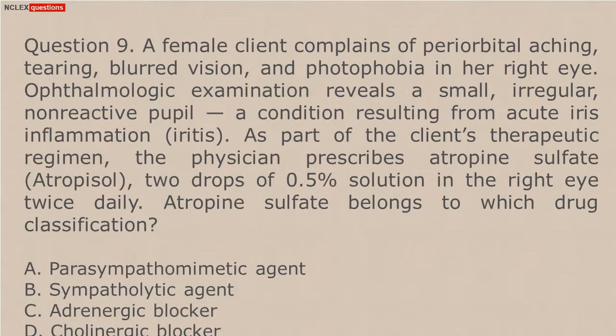Question 9. A female client complains of periorbital aching, tearing, blurred vision, and photophobia in her right eye. Ophthalmologic examination reveals a small, irregular, non-reactive pupil, a condition resulting from acute iris inflammation (iritis). As part of the client's therapeutic regimen, the physician prescribes atropine sulfate (Atropol), 2 drops of 0.5% solution in the right eye twice daily. Atropine sulfate belongs to which drug classification? A. Parasympathomimetic agent. B. Sympatholytic agent. C. Adrenergic blocker. D. Cholinergic blocker.